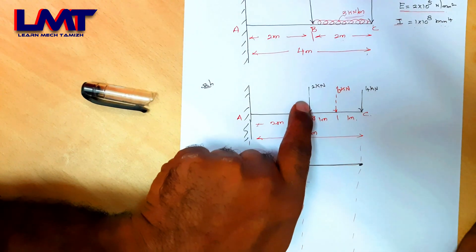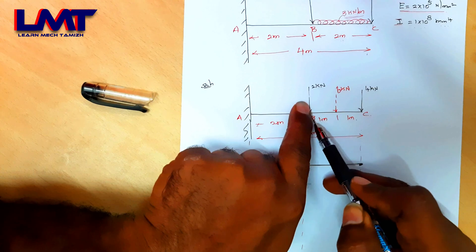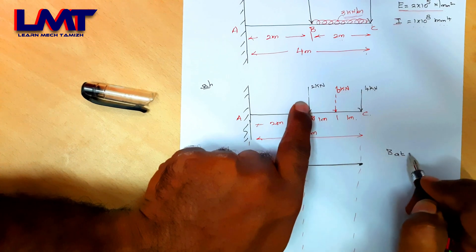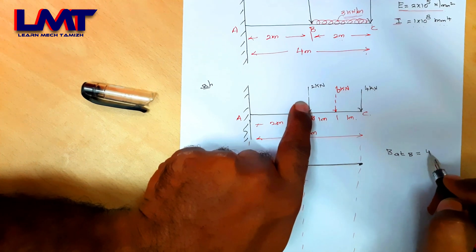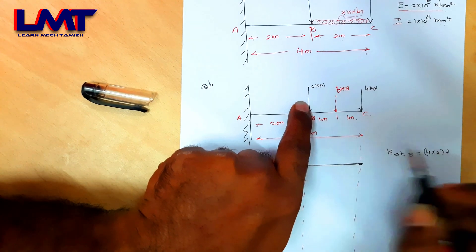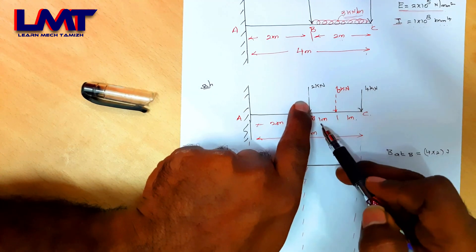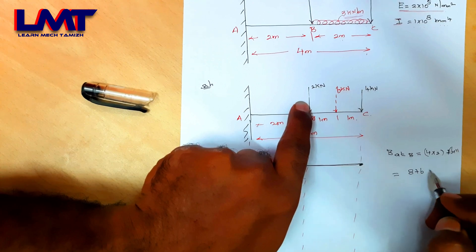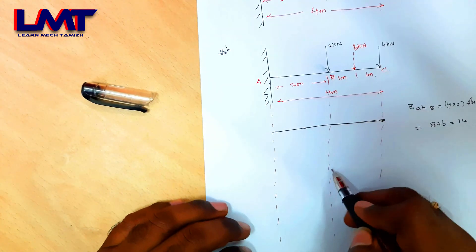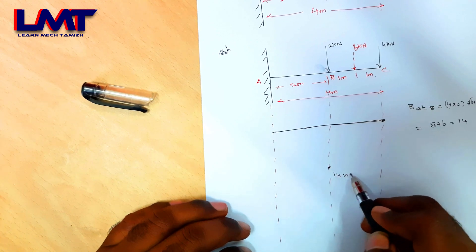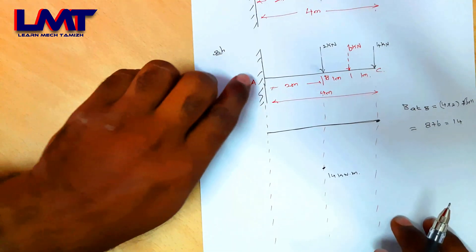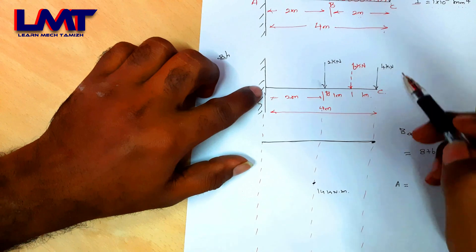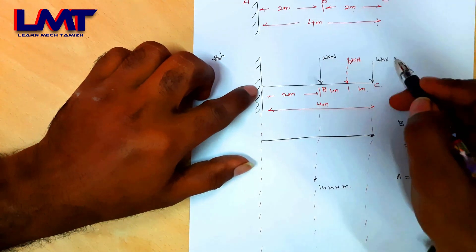The bending moment at point B: the 4 kN load is at a distance of 2 m from the right side, and the 6 kN load is 1 m away. So bending moment at B = 4×2 + 6×1 = 8 + 6 = 14 kNm. The bending moment at E: considering all loads, 4×4 = 16.